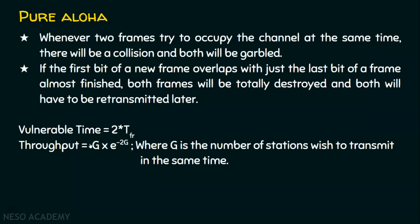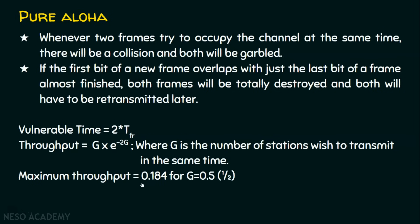The formula for throughput is S = G × e^(−2G), where G is the number of stations that wish to transmit at the same time. If two stations want to transmit simultaneously, equate G = 2 in the formula to get the value. The maximum throughput will be 0.184 when G = 0.5, meaning when half a station transmits per frame transmission time, we get the maximum throughput.